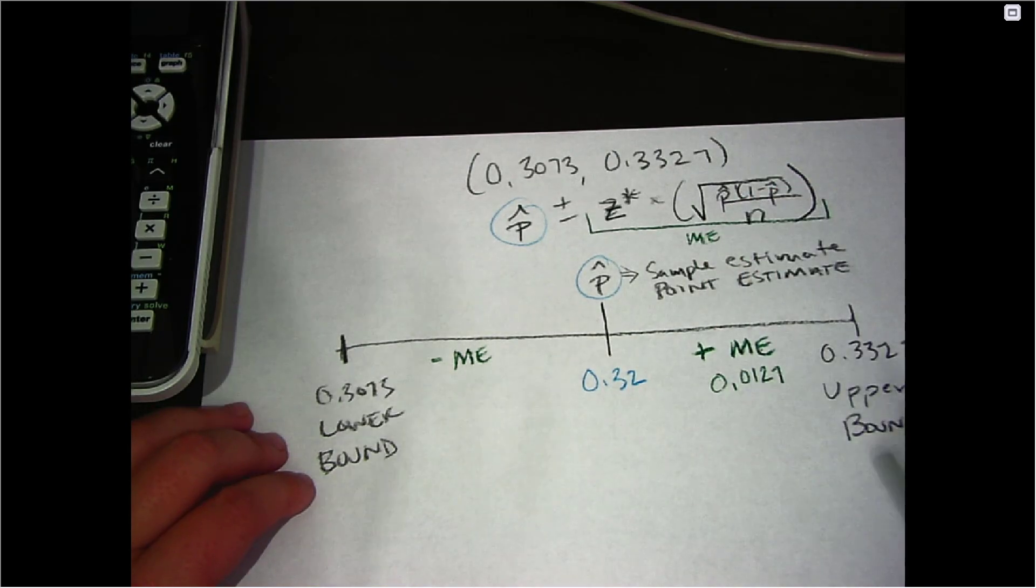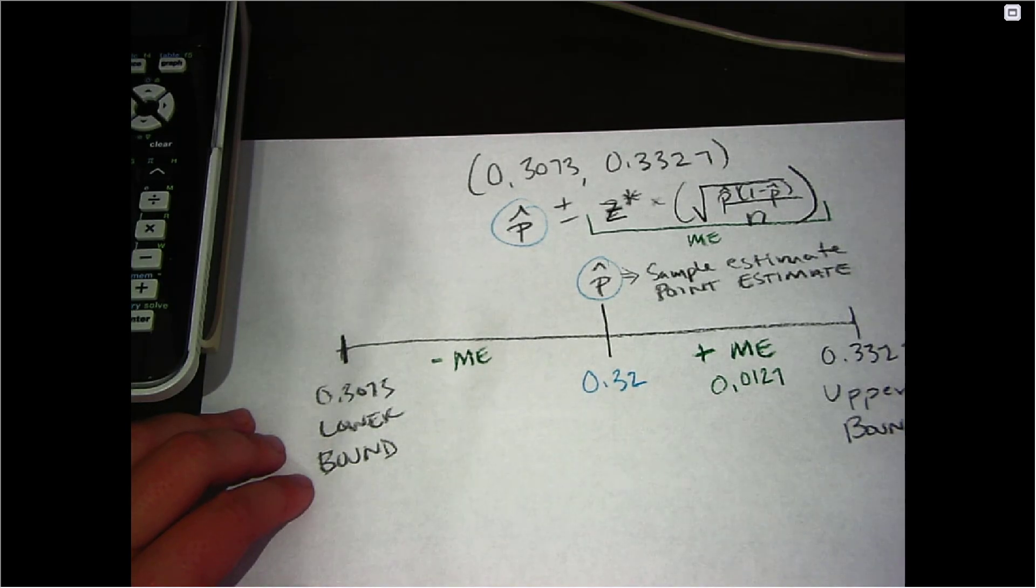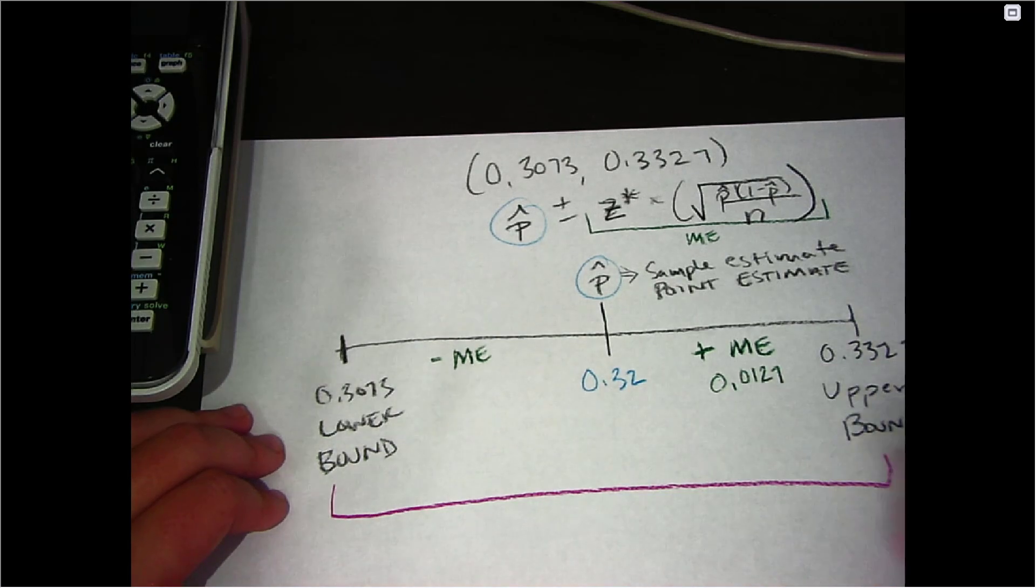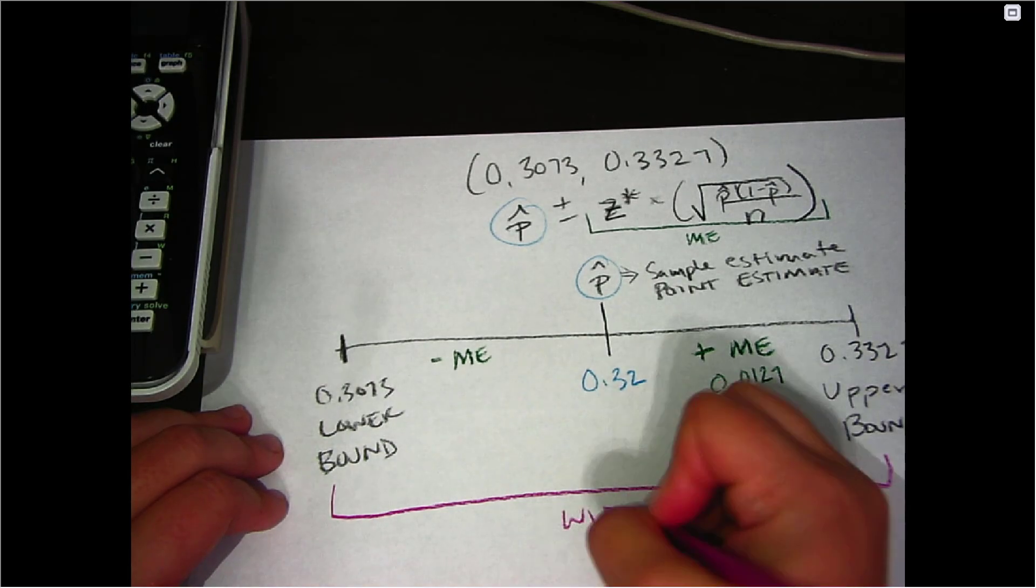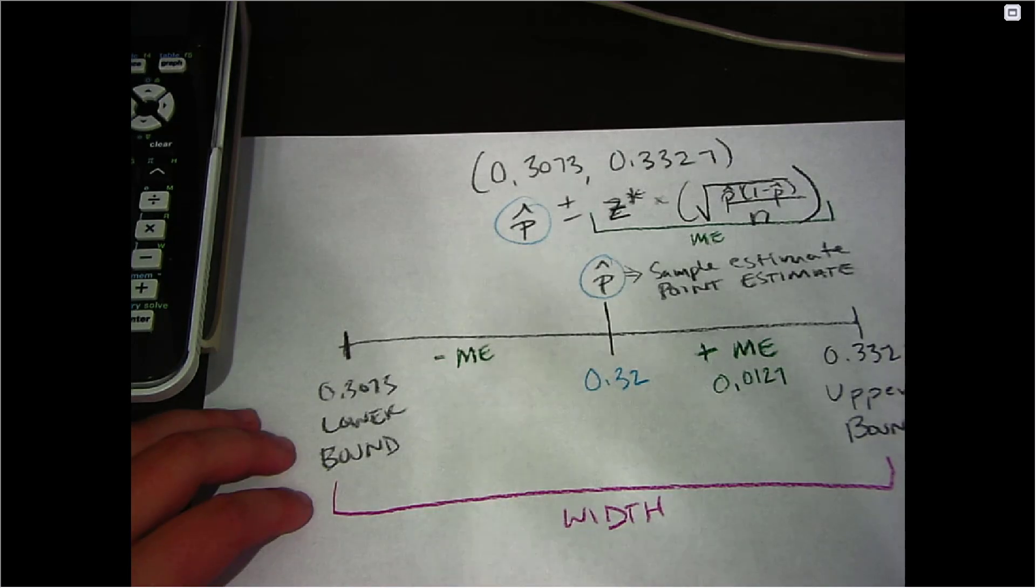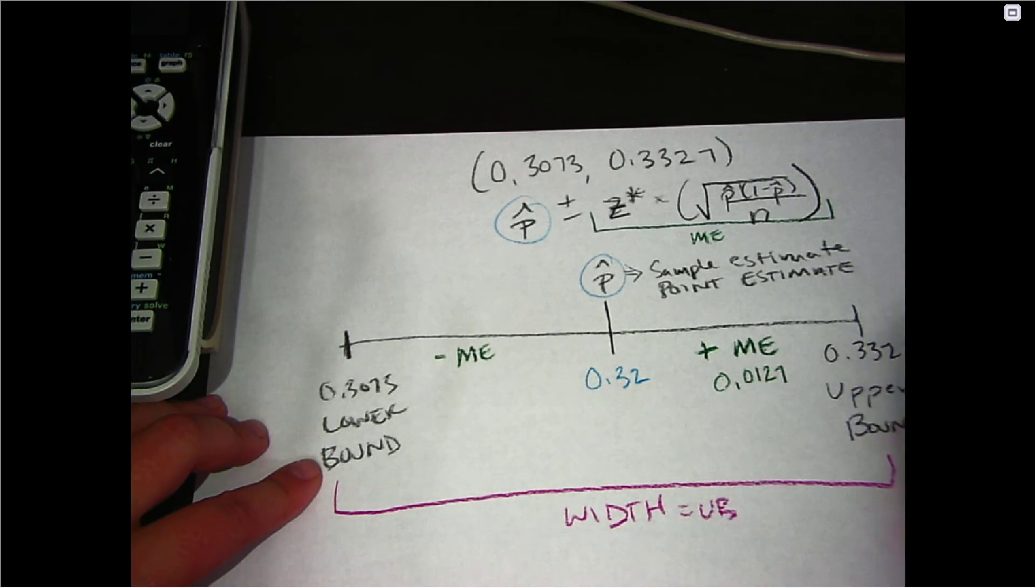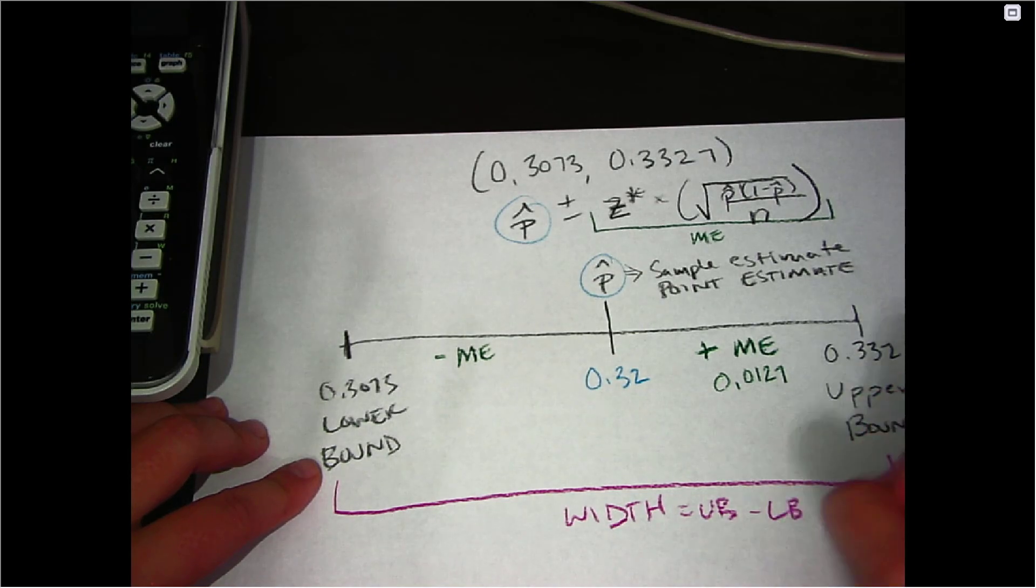But I want to show you how you can find that if you wanted to working backwards and also just more of the mechanics of a confidence interval. So just like anything, the width between two values, if you want to find that, you would take your upper bound and subtract your lower bound.